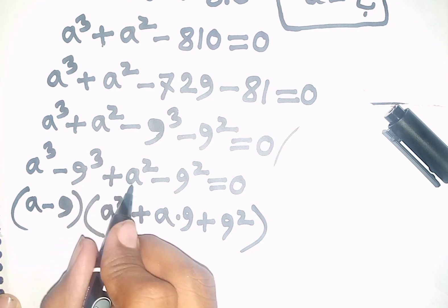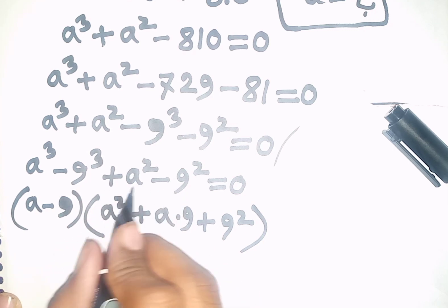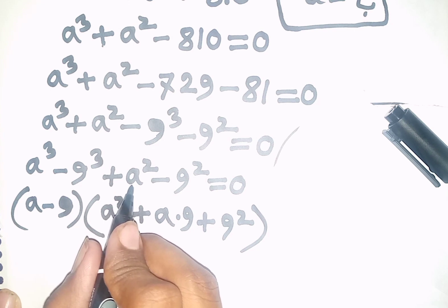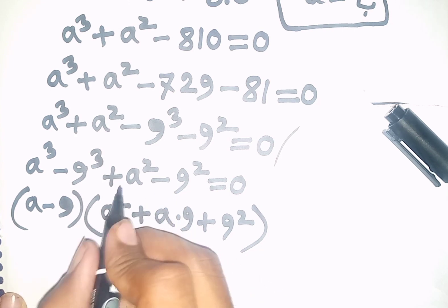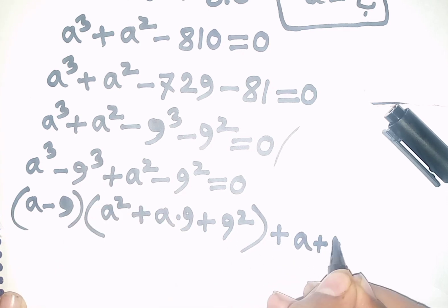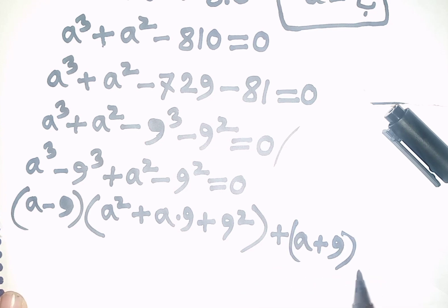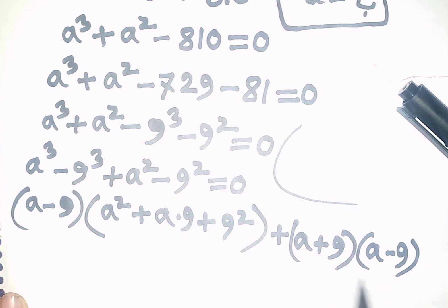Now here we can apply the formula of a² minus b². Here a is as a but b is as 9. So according to the formula we can write here plus (a + 9)(a - 9), then is equal to 0.